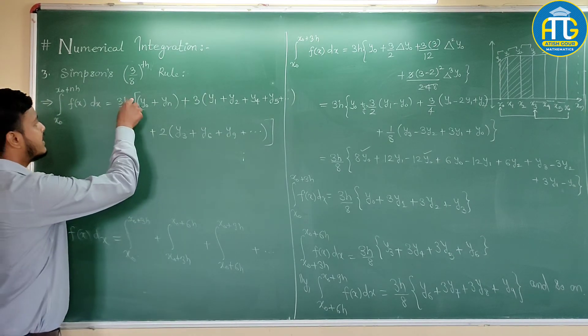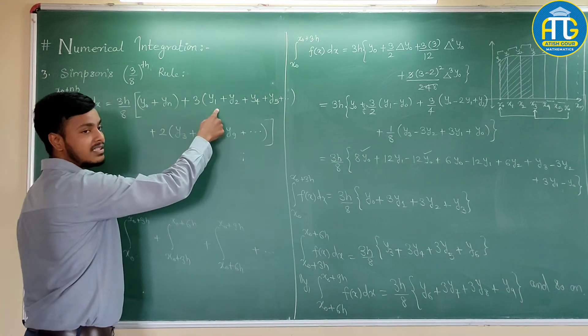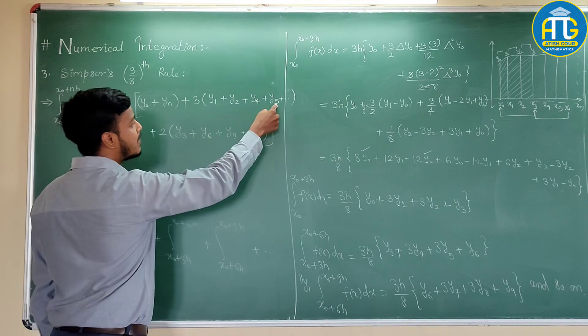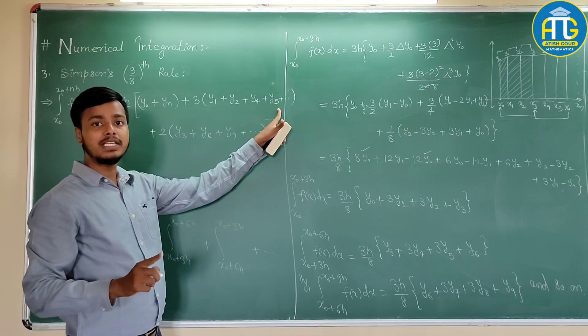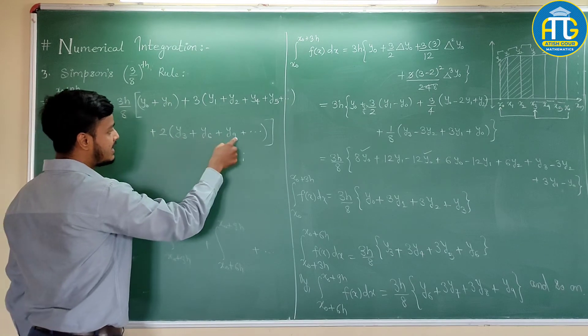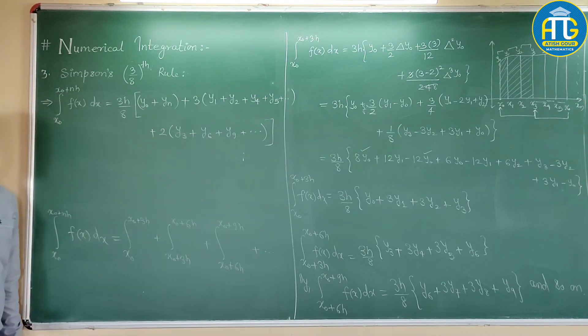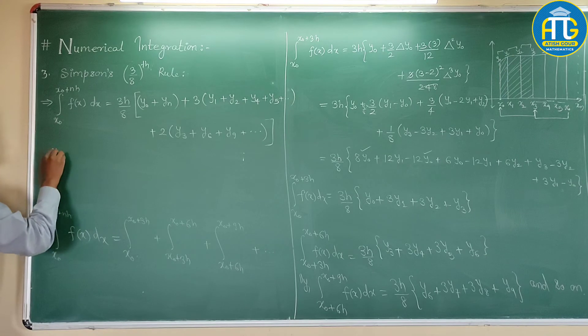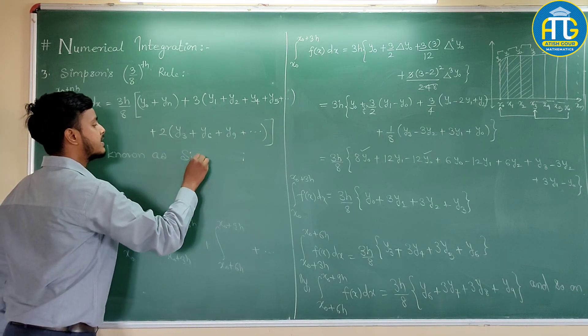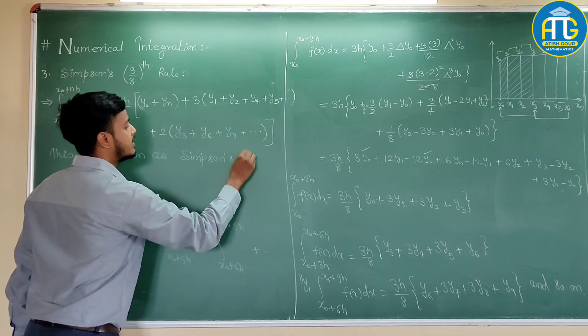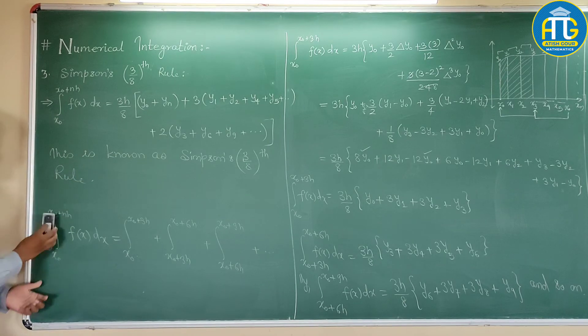And how you can remember this? 3h by 8, y0 plus yn, 3 times the term where the suffixes are not multiple of 3. Here you can see these are the suffixes 1, 2, 4, and 5, and these are not multiples of 3. Whereas, if you see, wherever the suffixes are multiples of 3, you have to multiply those terms by 2. So, this is known as Simpson's 3/8 rule.